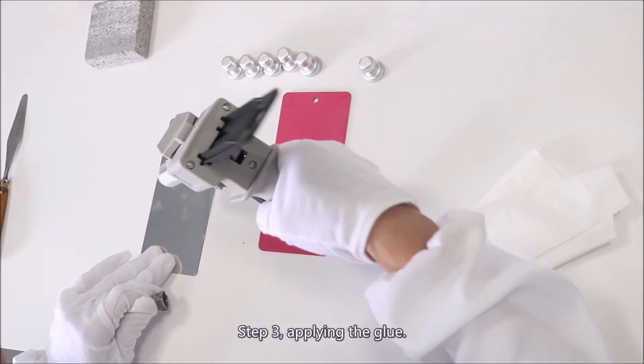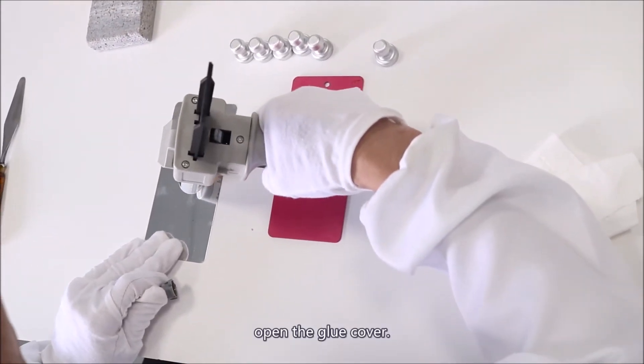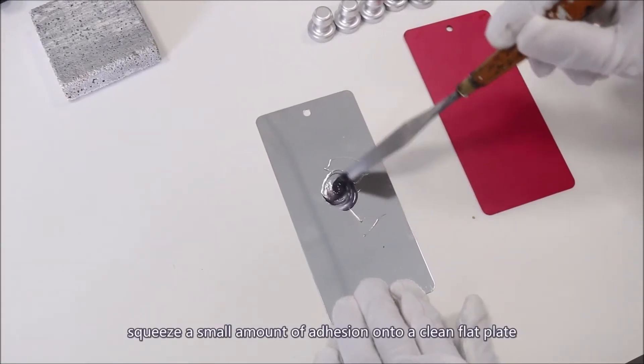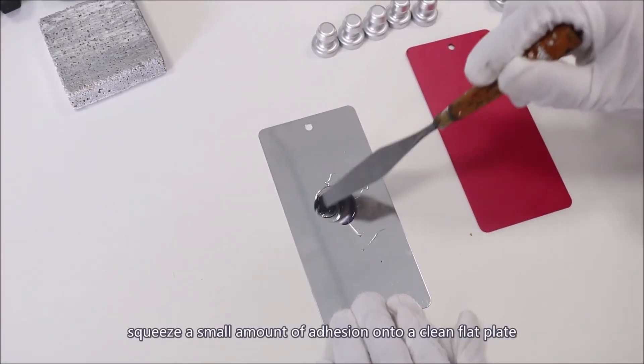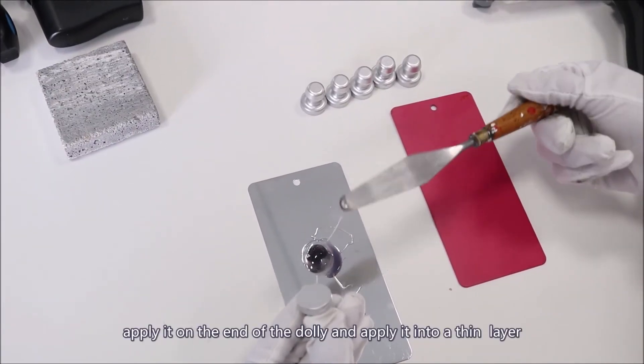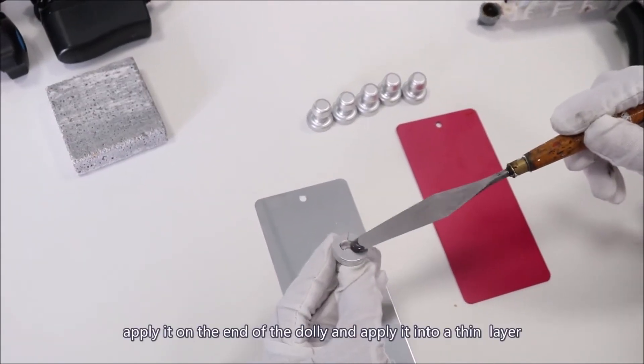Step 3: Applying the glue. Open the glue cover. Then lightly press the glue gun trigger. Squeeze a small amount of adhesive onto a clean flat plate. Gently mix it with a spatula. Apply it on the end of the dolly in a thin layer.